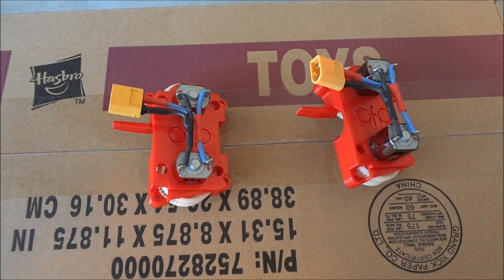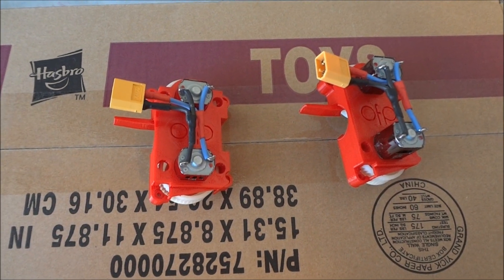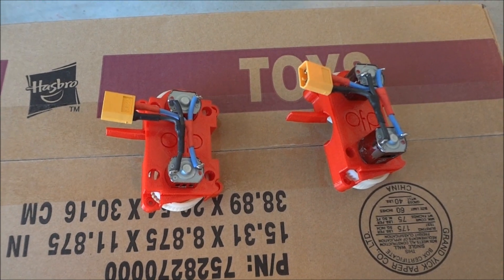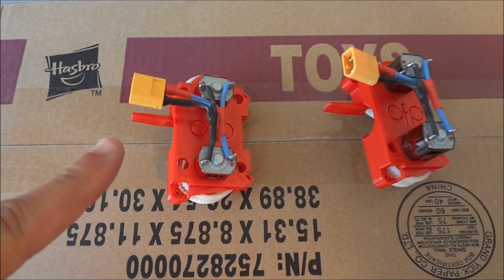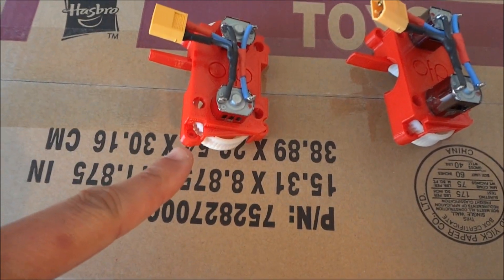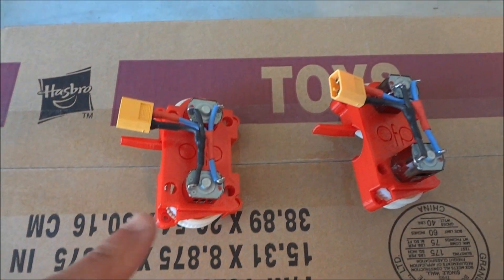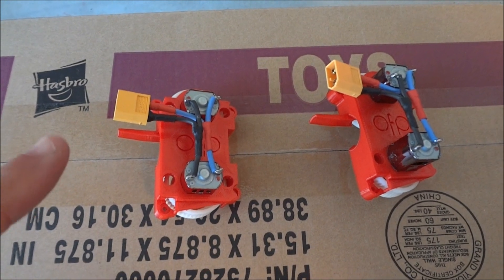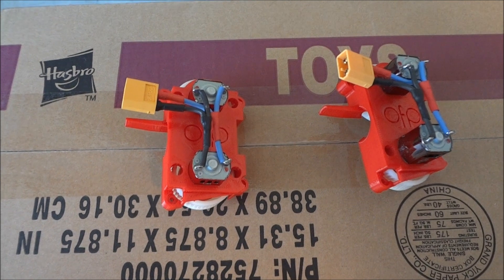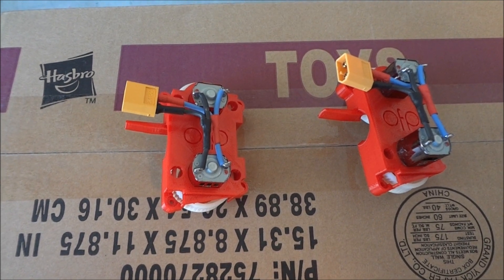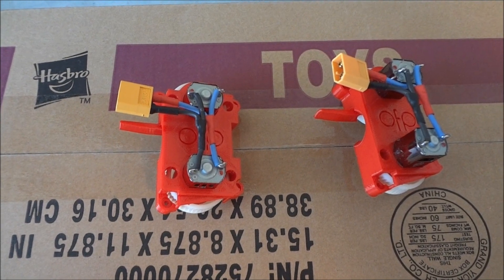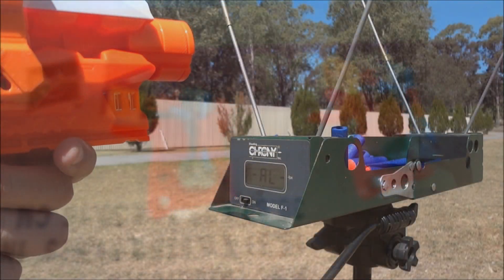Alright, so we're going to do the same test as what we did with the Kronos X. So we've got our motors installed in an OFP 42.5mm cage and we've got Worker ABS flywheels. We are going to use FVJ darts, hard tip darts in a Stryfe which has 16 AWG wire and an upgraded switch. So let's go and see what we get.